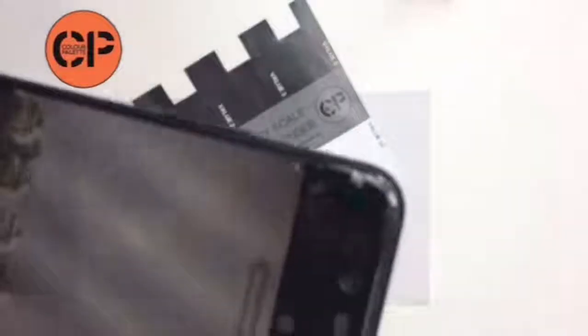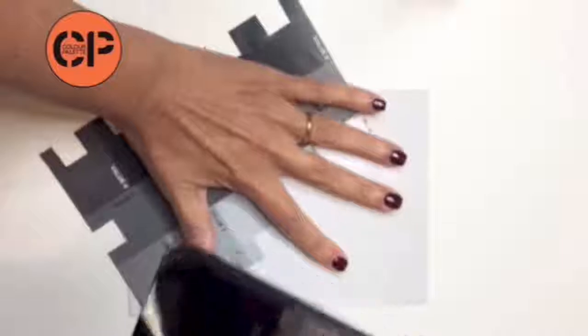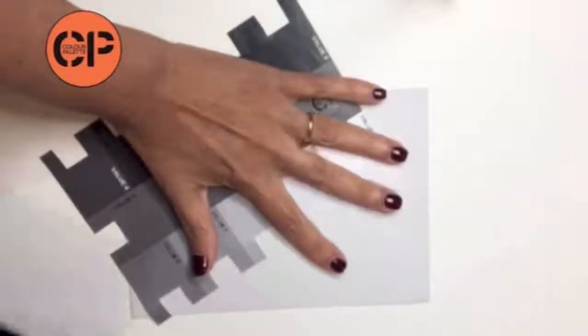To find the tonal value of a color, you only need to place the tool in the sample and then our goal is to find the gray that matches that color tonally. You can use the camera of your phone to help you. Make sure you select the mono filter and the process will be much easier.